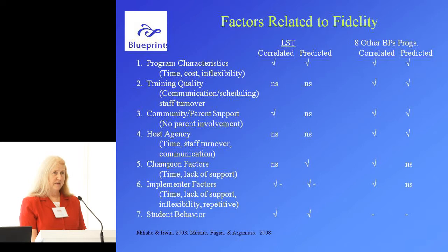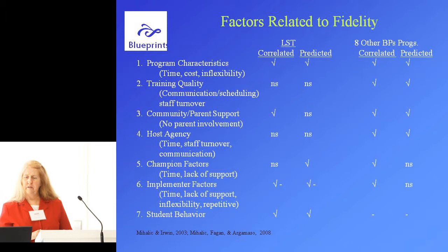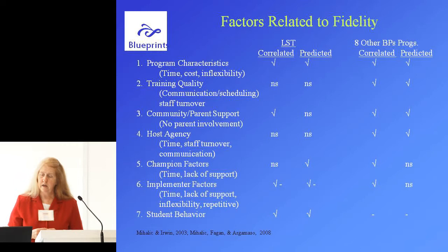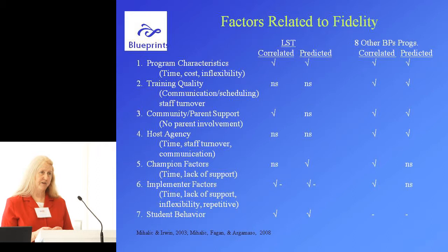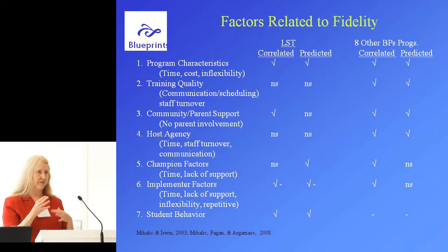Associated with fidelity are factors we've already been talking about. Some of the findings are on both LST and our other violence project replicating eight other Blueprint programs. For Life Skills Training specifically, we found that program characteristics were very important. Our coordinators told us their major issues were around time, cost, and inflexibility. Time had to do with taking away from core curriculum and statewide testing — and time came up as a major issue even when we didn't ask about it within the scale.